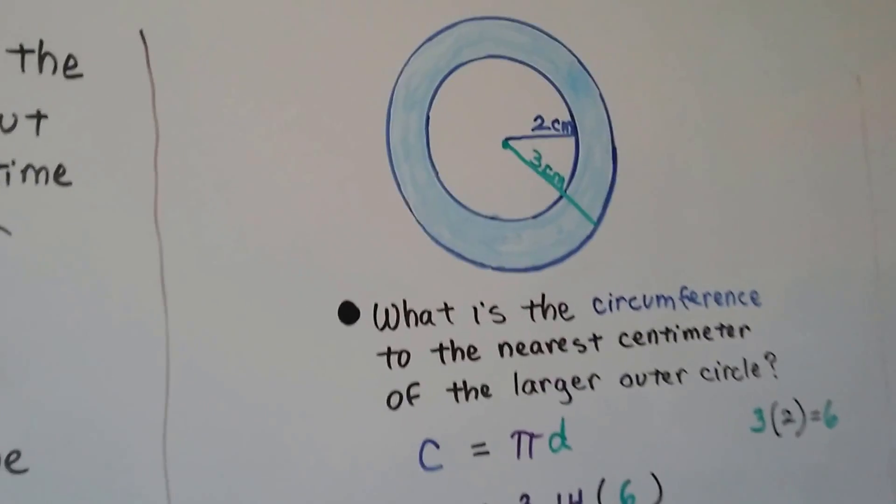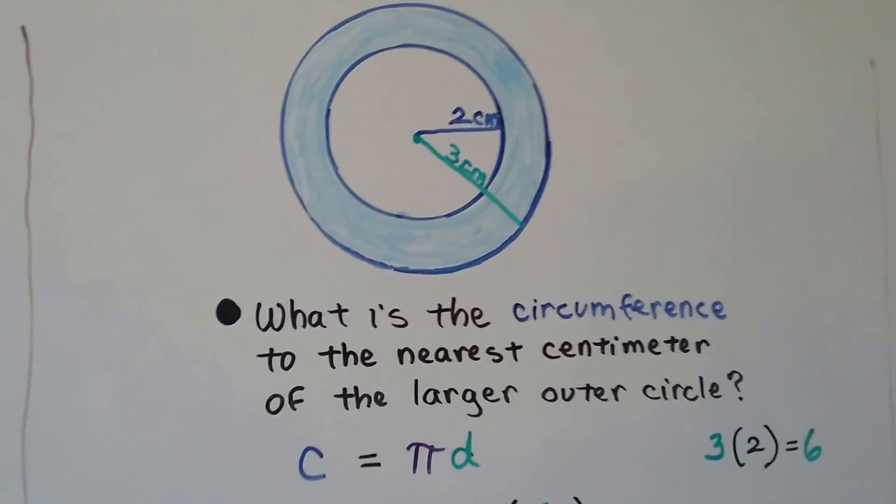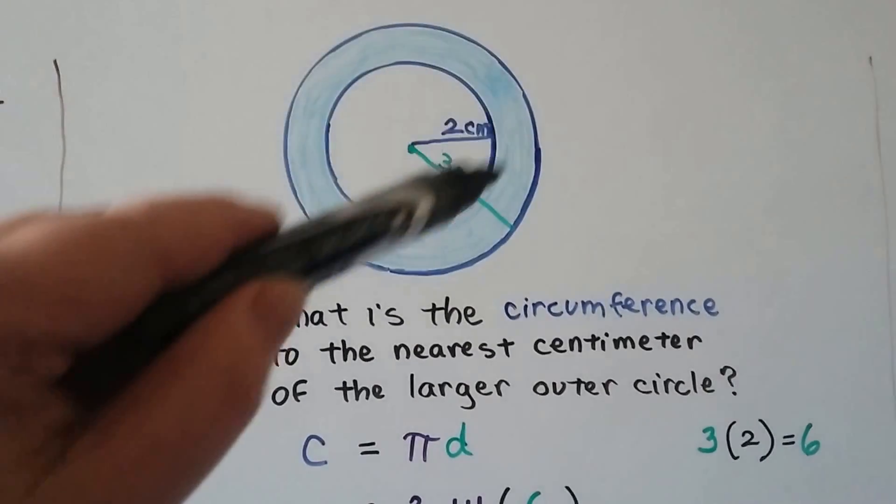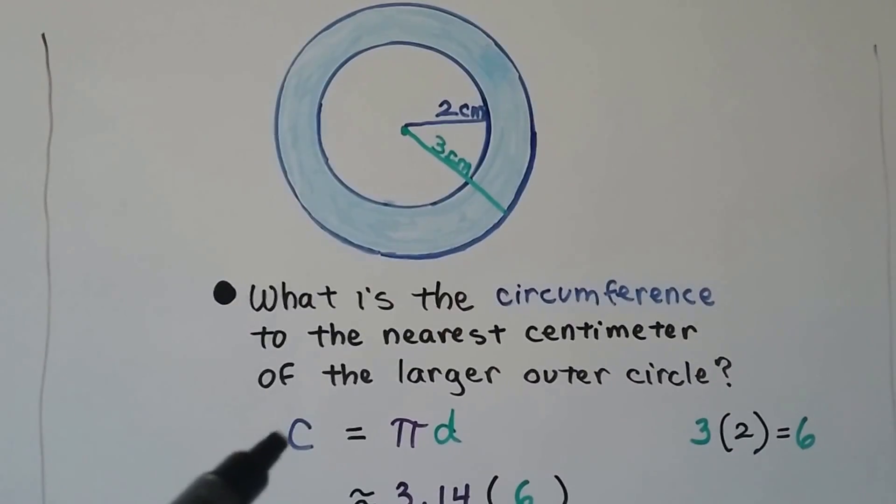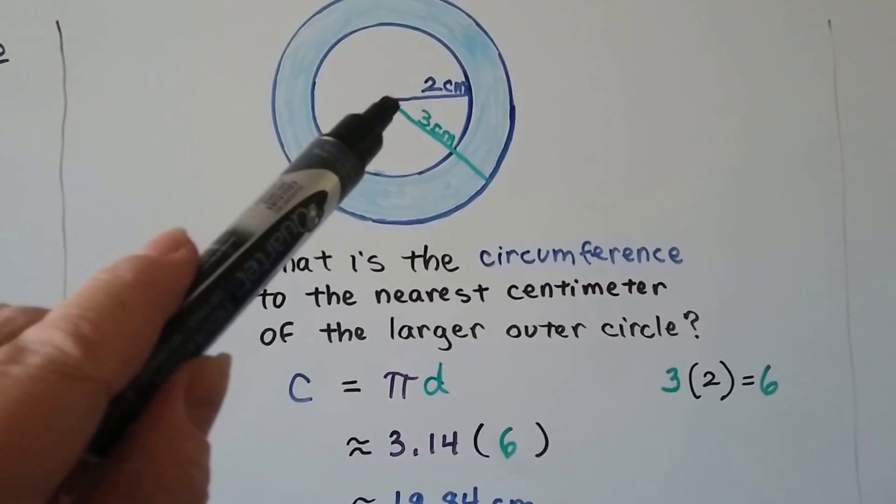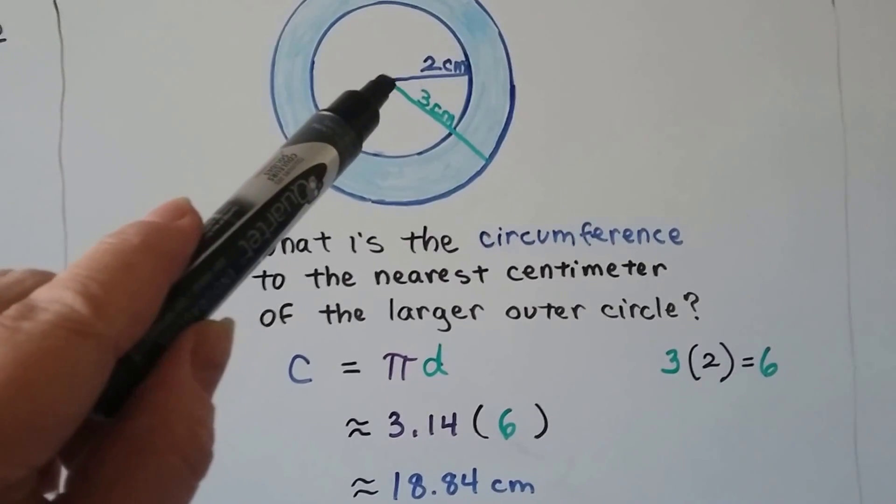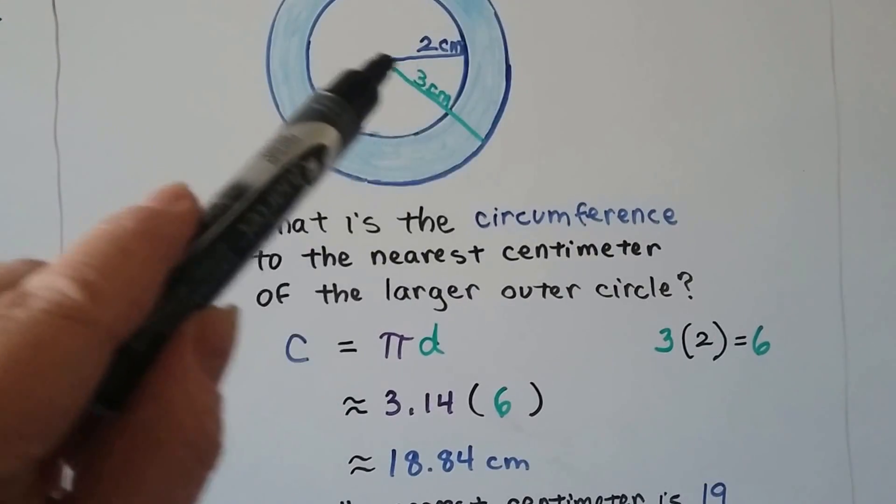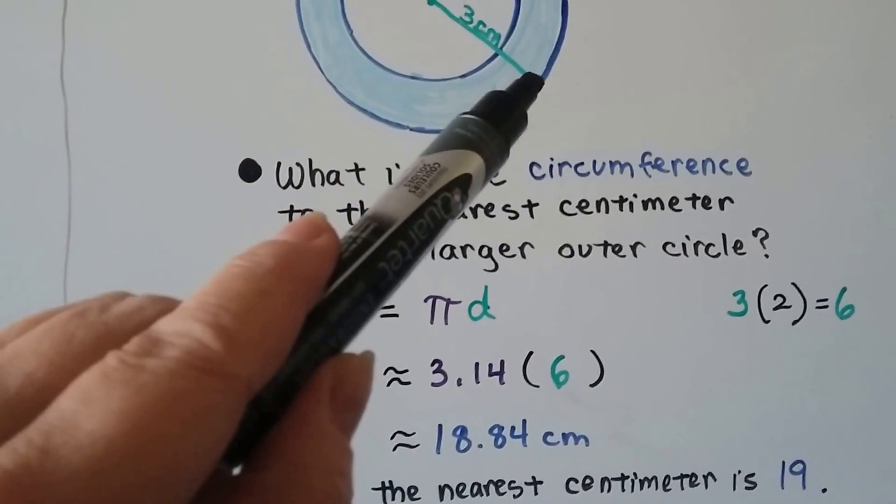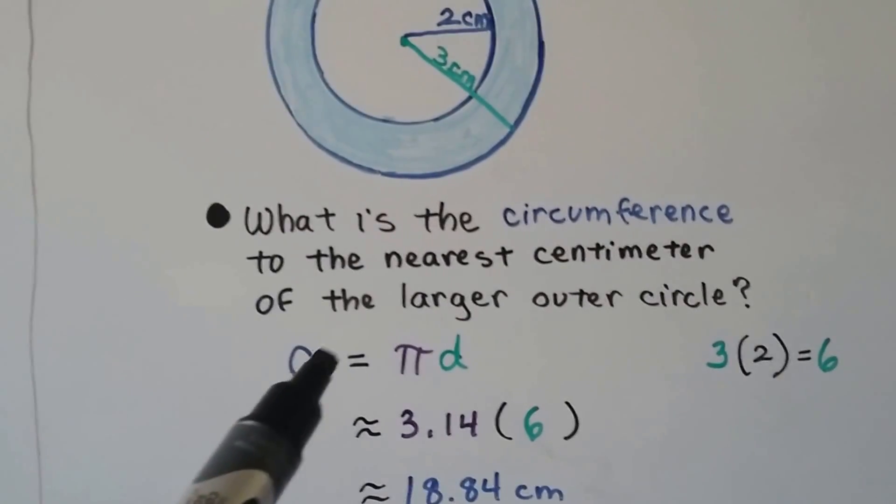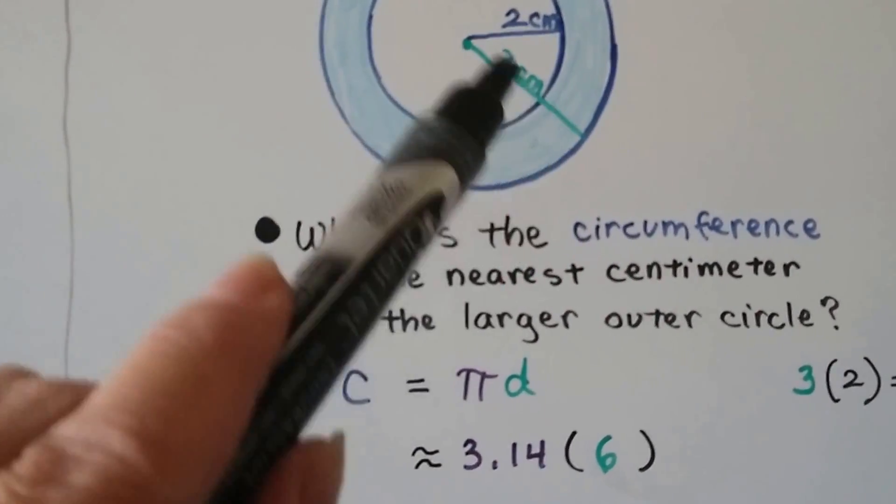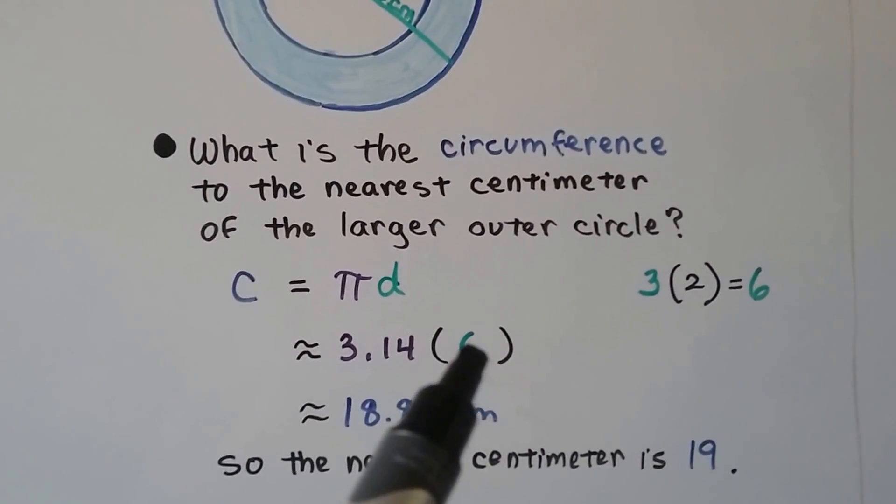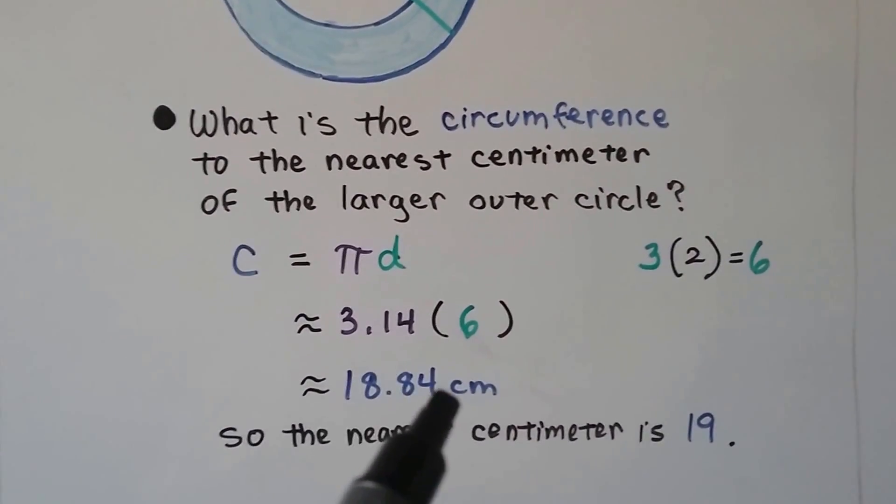Now we've got this double looking circle. What is the circumference to the nearest centimeter of the larger outer circle? So the circumference would be this outside measure. Everything inside doesn't matter. We're going to use circumference equals pi times d, and it's giving us that from the center point to this line is 2 centimeters, and from the center point to this edge is 3 centimeters. Well, that 3 centimeters is the radius, isn't it? It's going from the center point to the edge, and we need to use circumference equals pi times diameter. So we just double this. 3 times 2 is 6, so we know the diameter is a 6. We do pi 3.14 times 6. We get approximately 18.84 centimeters.